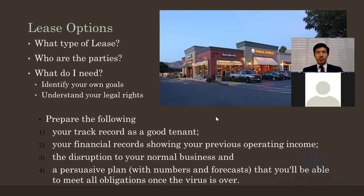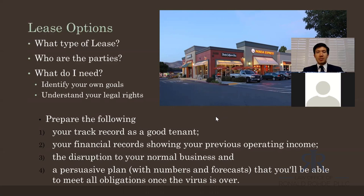Number four: a persuasive plan with numbers and forecasts to catch up on those rent payments. In my Panda Express scenario with $75,000 revenue and a $10,000–$15,000 profit, you could put together a plan saying: I'm asking for a three-month 50% reduction, totaling $15,000. The plan after that would be to catch up once August or September hits — foregoing the location's profit to repay the rent that was forgiven during those months. A plan with numbers and forecasts is the best way to show the landlord you're not just giving up rent with no plan to recapture it.